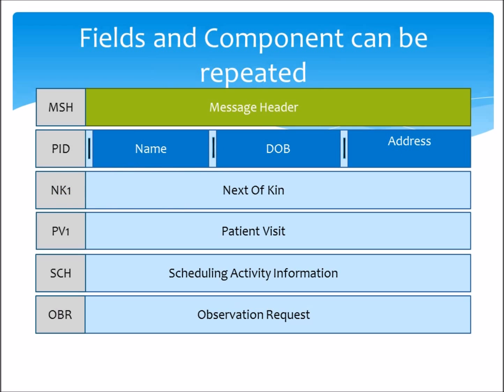Another feature of HL7 messaging is that it allows some fields and components to be repeatable. For instance, you might have two addresses — one for your home, and one for your place of work.